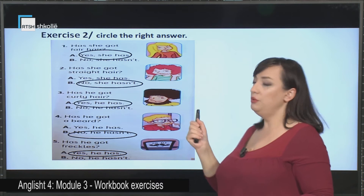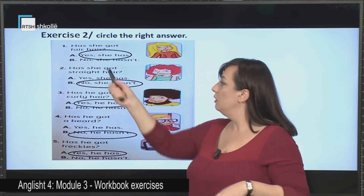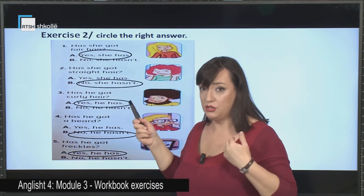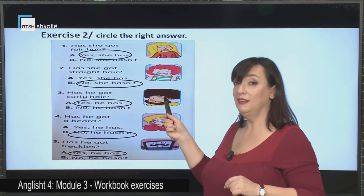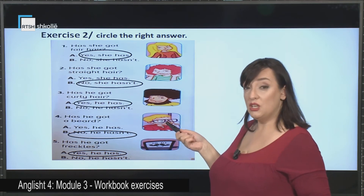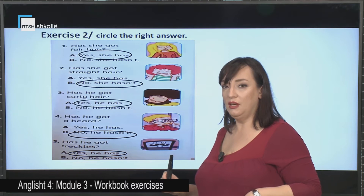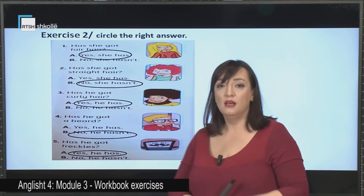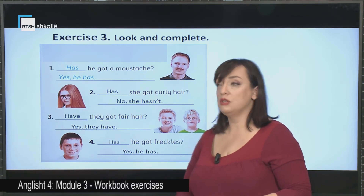Look at exercise number two: circle the right answer. Look carefully at the pictures and let's read the questions together. 'Has she got fair hair?' — Yes, she has. 'Has she got straight hair?' — No, she hasn't. 'Has he got curly hair?' — Yes, he has. 'Has he got a beard?' — He has got a mustache but not a beard, so we say: no, he hasn't. 'Has he got freckles?' — Yes, he has. Is it clear? Good.